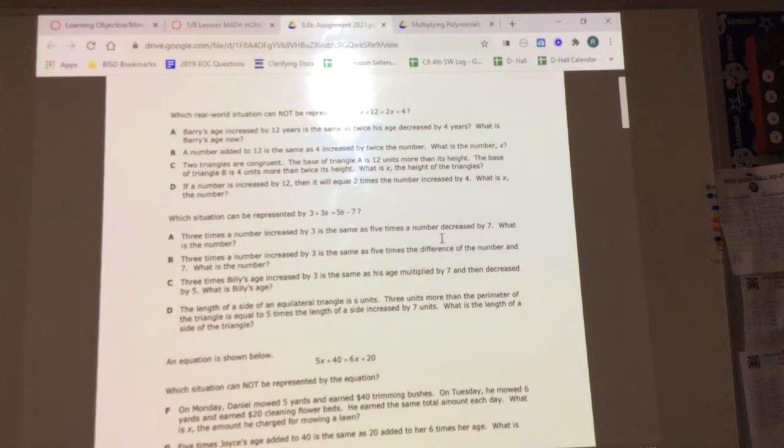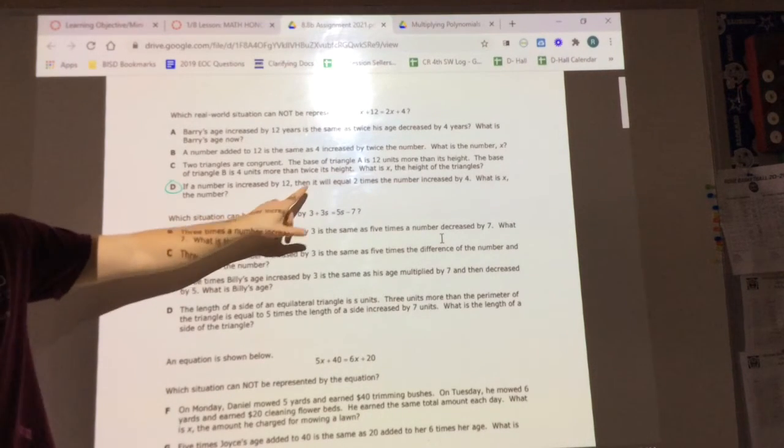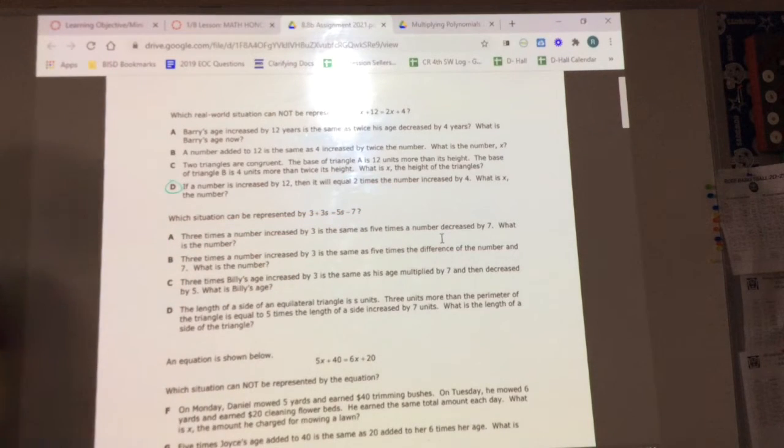Alright, great job. You need more time? Okay, we're cool. Alright, awesome. What do we think? How many think it's A? How many think it's B? C? D? We all think the incorrect answer is D. If a number is increased by 12, then it will equal 2 times the number increased by 4. Well, that seems like that one works. I did not get B. Mihal, what did you get? I got A.